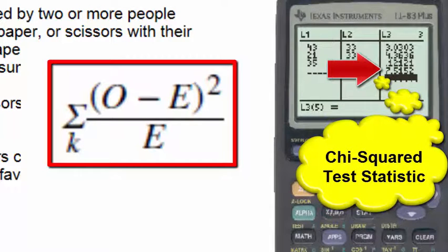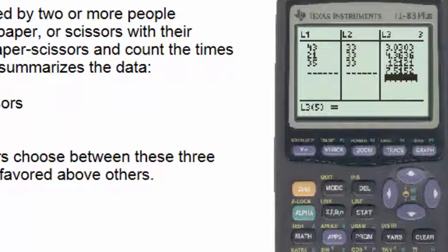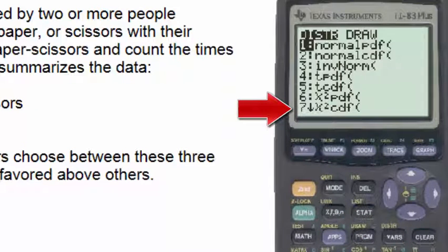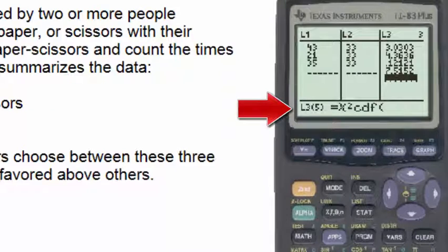And the number 7.5152 will now be used as one of the inputs into the chi-squared cumulative density function. We'll go to the chi-squared cumulative density function by going to the second distribution button and then selecting number 7, the chi-squared cumulative density function.